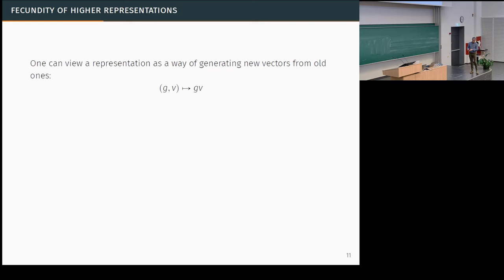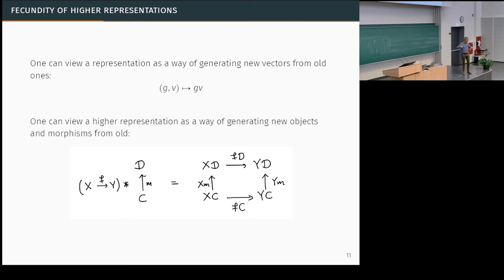In a higher representation, there is much more generative capacity. If I have a vector space, a representation, and a vector in that representation, I can apply elements of the group and generate a whole lot of vectors. In a higher representation, I can take an object and produce more objects in my category. I can also take a morphism between two objects and produce a new morphism. Morphisms act on objects, objects act on morphisms, morphisms act on morphisms — there's a whole lot of generative capacity, and I consistently underestimate how rich this structure is.